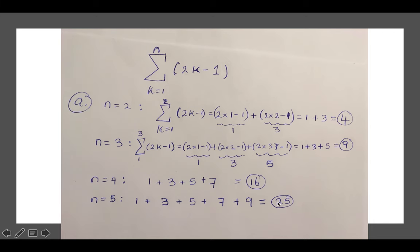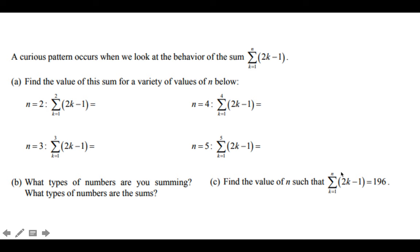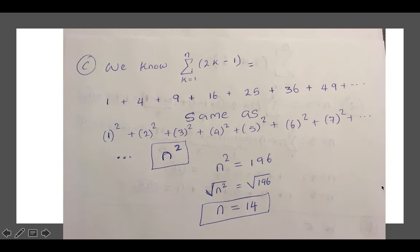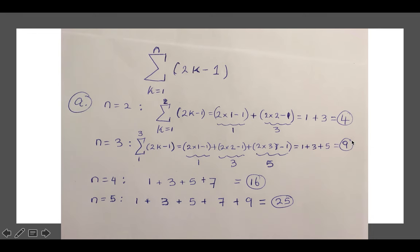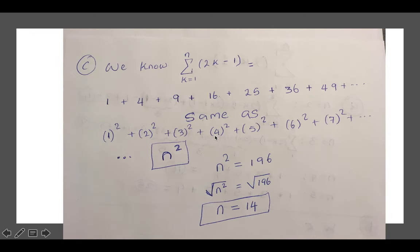Now this one says find the value of n such that sigma sum 2k minus 1 gives you 196. It's pretty simple if you think of the type of sums that it gives us. The types of sums that it's actually giving us: 1, 4, 9, 16, 25, 36. Let's go back: 4, 9, 16, 25, same thing.